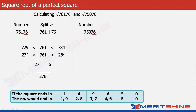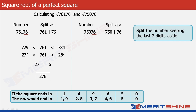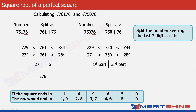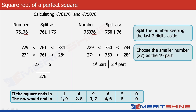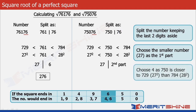Let us take another example: 75076. Here again we will split the number keeping the last two digits aside. So we will get 750 in the first part and 76 in the second. We observe that 750 is also in between 729 which is 27 squared and 784 which is 28 squared. So the first part will get the number whose square is smaller, which in our case is 27. For the second part, again our choice could be 4 or 6. In this case 750 is closer to 729, so we will get 4 in the second part. Finally clubbing these two, we will get our final answer as 274.